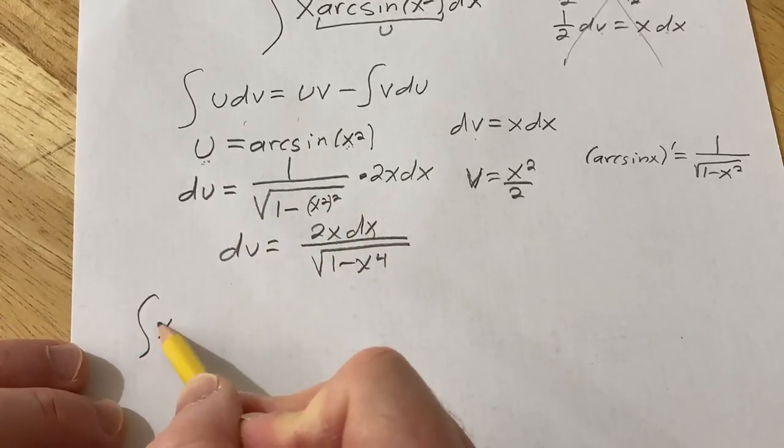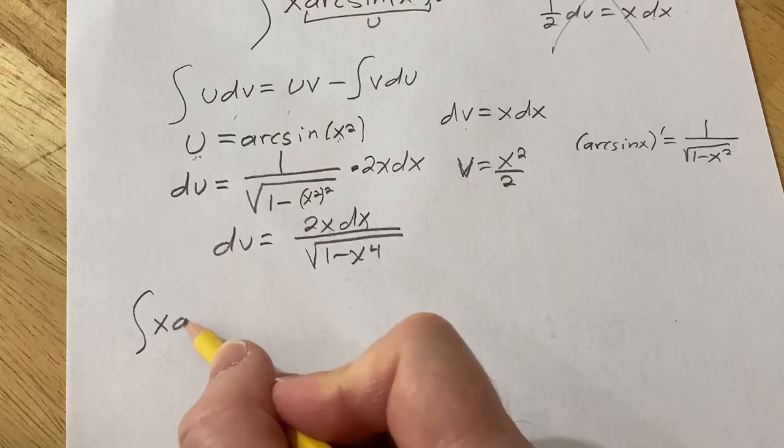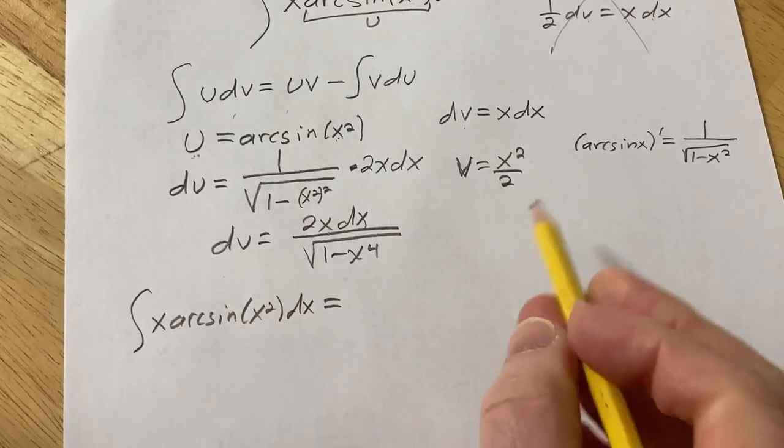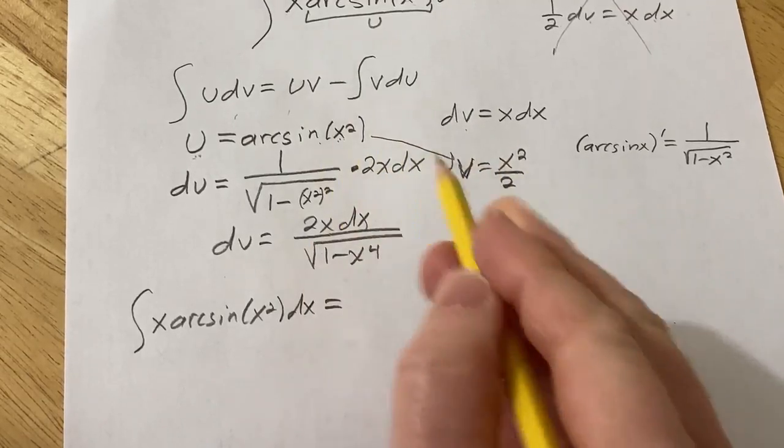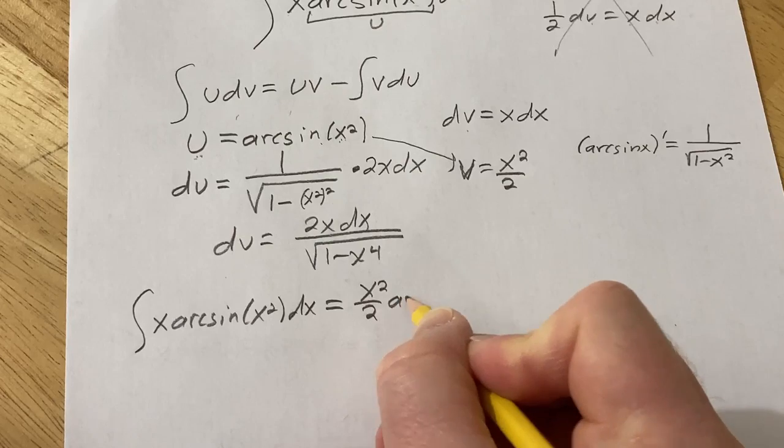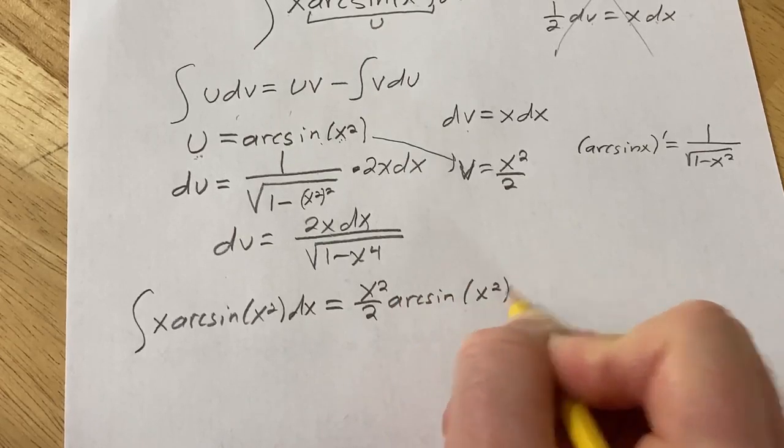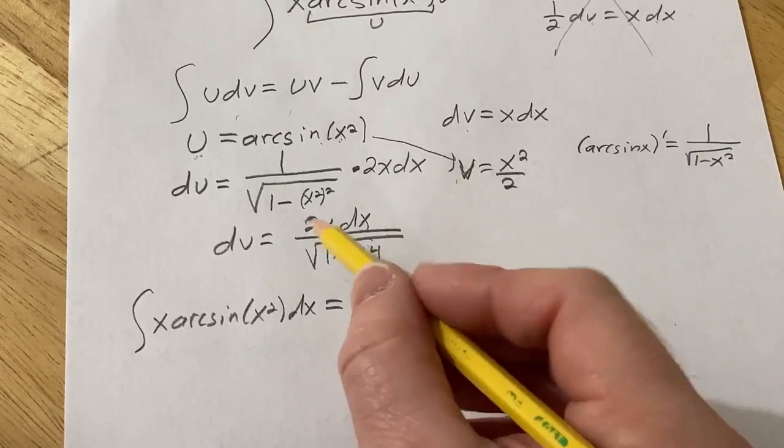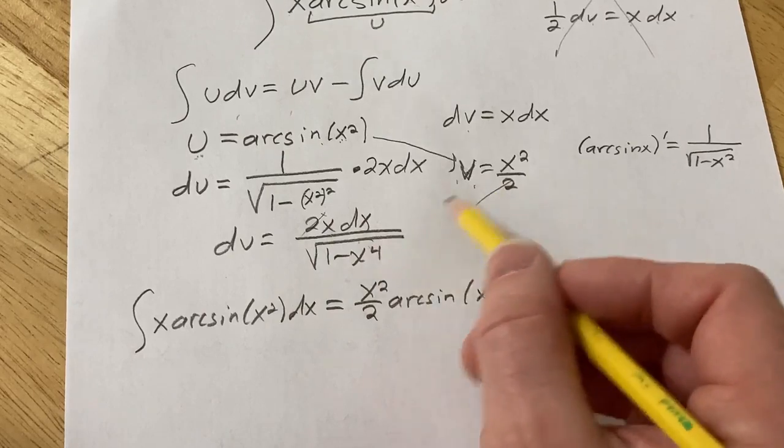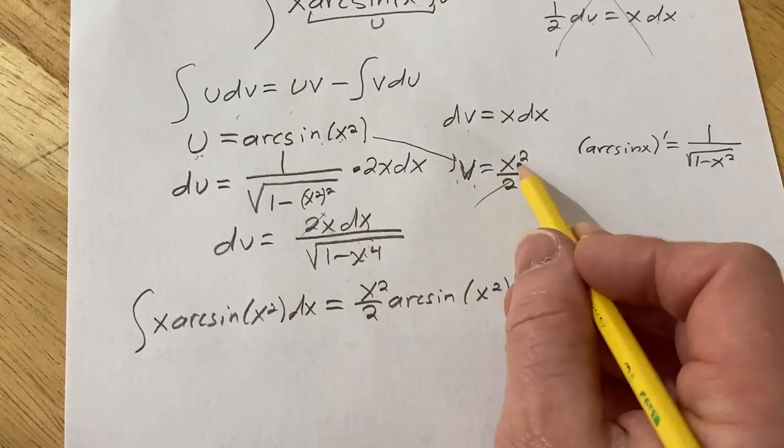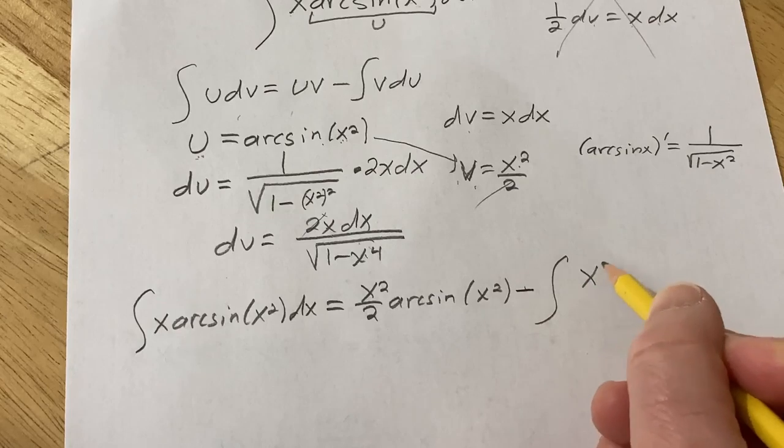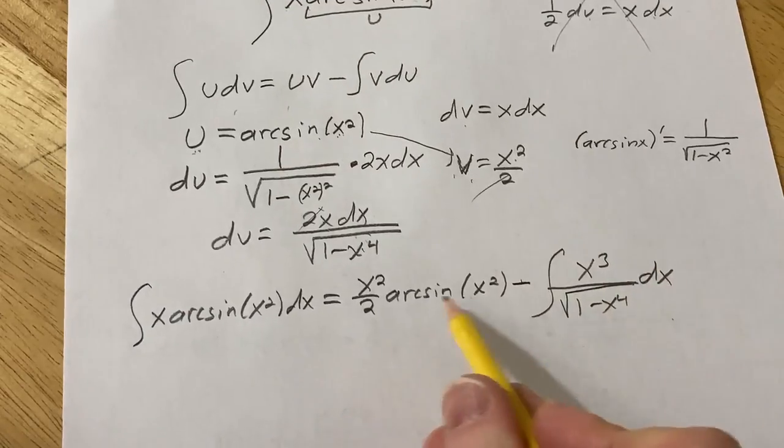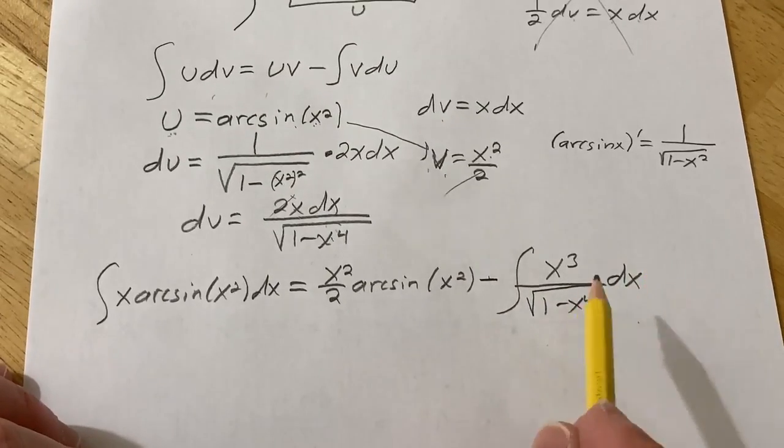So I'm going to write down the original integral. So the integral of x arcsin(x squared) dx. And so this is going to be UV. So this times this minus the integral of VdU. Okay. So these twos will cancel, which is really cool, because we're multiplying these. And basically, we're going to get x times x squared. It's going to give us x cubed. And then here we have the square root of 1 minus x to the fourth dx. So this part is done. We basically just have to deal with this part here.